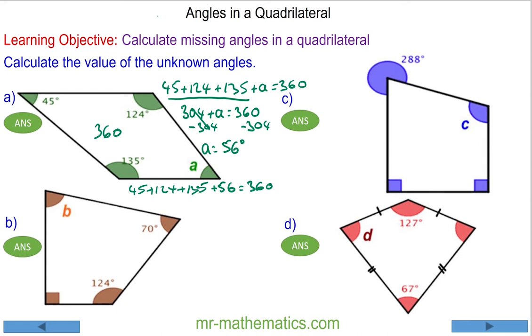For question B, we know this symbol means it's perpendicular, which is 90 degrees. So the four angles: B plus 70 plus 124 plus the 90-degree angle will equal 360.